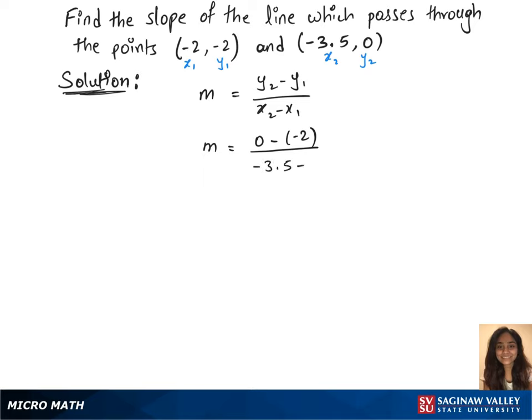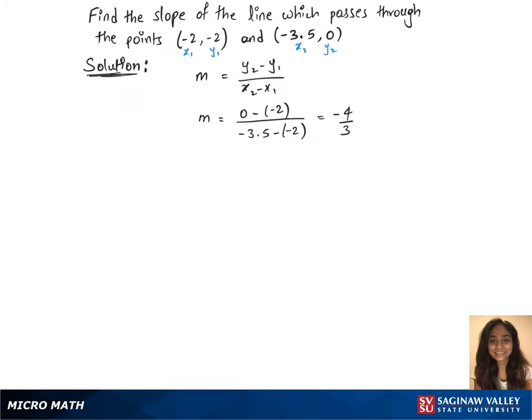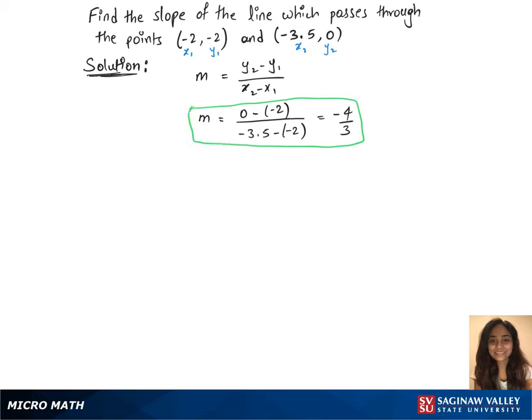Now we'll get the m value as -4/3, so that's our slope. The graph looks like that for the points given.